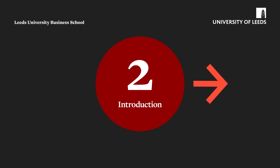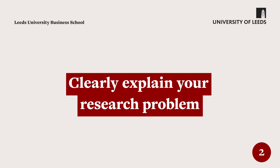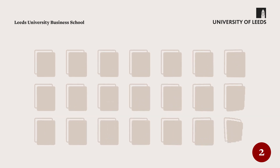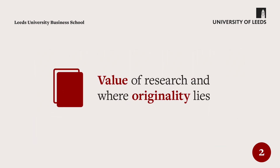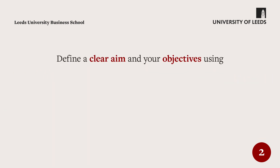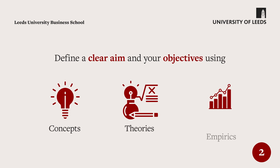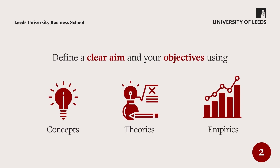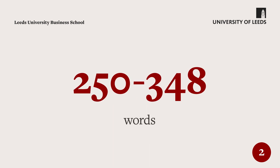Step 2: Write your introduction. Clearly explain your research problem. Outline why this research is of value and where its originality lies. Define a clear aim and your objectives, using concepts, theories and empirics, to justify the major approaches you'll take. Keep this between 250 and 350 words.